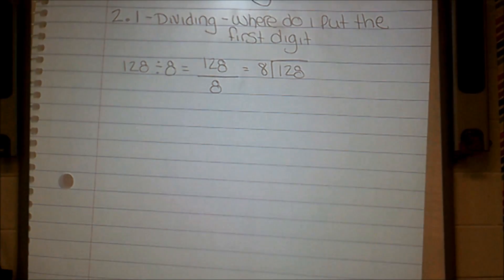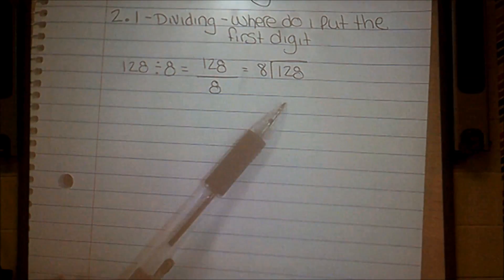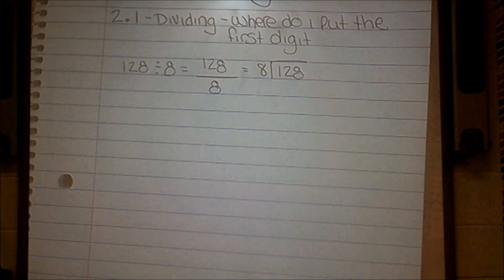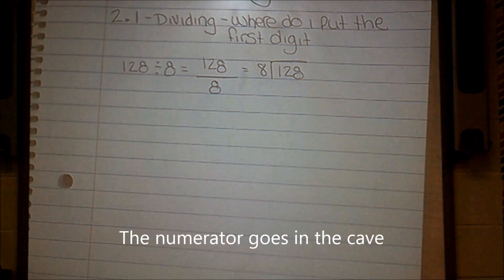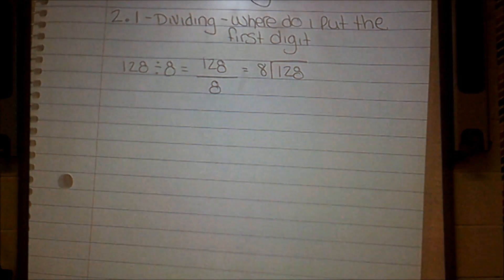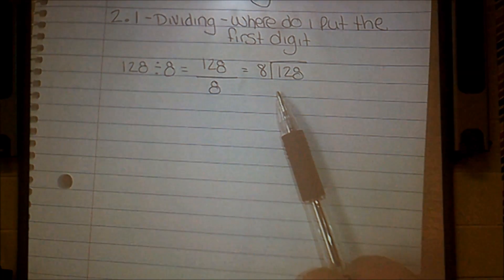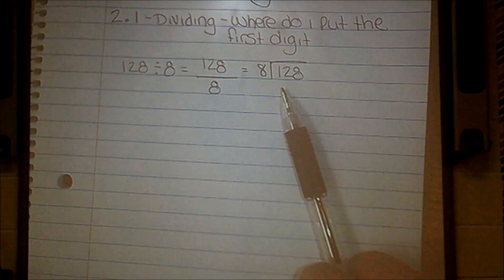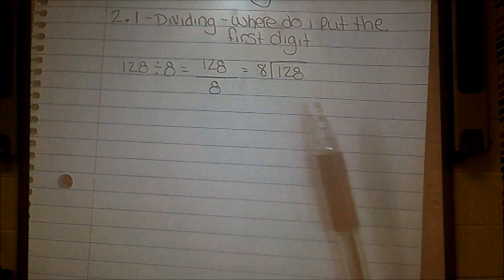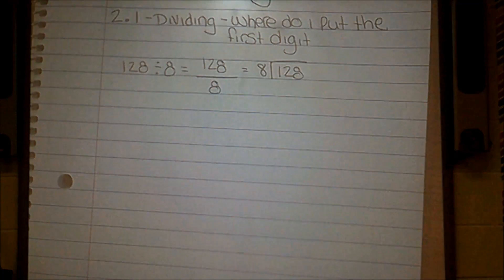Going back to the fraction 128 over 8, the way that I remember what number is my numerator and what number is my denominator is this: the numerator goes in the cave. If we're talking about taking a fraction and turning it into a division problem, I have to identify which number goes inside my cave. Your numerator is always going to go in your cave. Always. And I have a little song that I made up to help me remember that. It goes: the numerator goes in the cave, the numerator goes in the cave, hi-ho the dairy-o, the numerator goes in the cave.